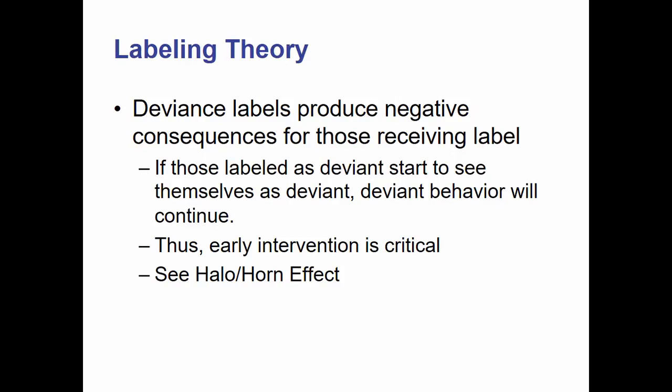Labeling theory states that deviance labels produce negative consequences for those receiving the labels. If those labeled as deviant start to see themselves as being deviant, then the deviant behavior will continue. If you ever are in the life of a young person and you see them starting to get labeled as being a bad kid, you need to try to do something about that. Once an individual is labeled as being a bad kid, they will start to internalize that, and once a child thinks of themselves as bad, they start seeing deviant acts as acceptable. This can spiral out of control very quickly. In psychological literature, this is sometimes known as the halo and horn effect.